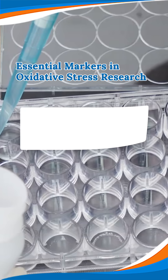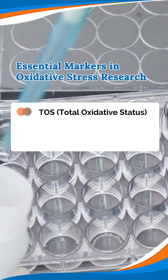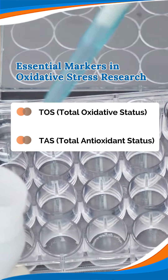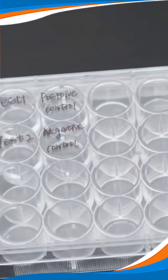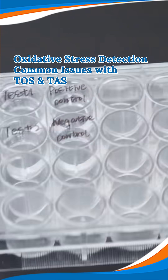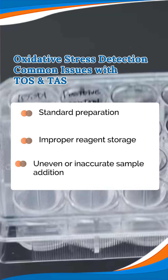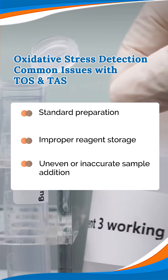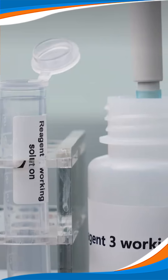In oxidative stress research, TOS and TAS are key indicators. Today, we'll focus on common issues in reagent preparation, storage time, and sample addition, and share tips to optimize them.